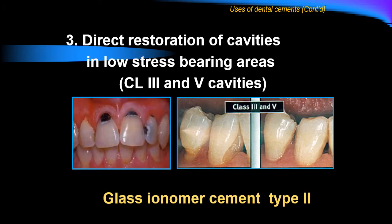The third use of dental cement is as a direct restorative material in cavities with low stress-bearing areas, such as class 5 and class 3 cavities, which are not subjected to high stresses of mastication. We fill them with glass ionomer cement type 2, because this type has specific advantages for controlling caries in these areas through fluoride release. The fluoride release strengthens enamel by forming fluorohydroxyapatite, which is resistant to dissolution by acids in the oral cavity.